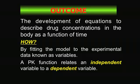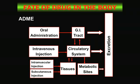We're going to fit the model to experimental data, focusing on pharmacokinetic parameters as our key variables. The PK function relates an independent variable to a dependent variable. The simplest example: the independent variable is the amount of drug given to the patient, and the dependent variable is almost always the concentration of drug in the blood — concentration, not amount.